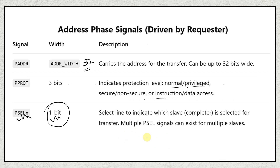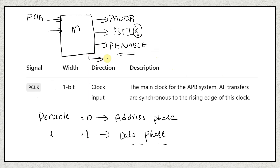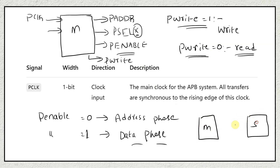Next is PWRITE, similar to HWRITE in AHB protocol. If PWRITE=1, it is a write transfer; if PWRITE=0, it is a read transfer. The master uses PWRITE to tell the slave the direction of transfer. If PWRITE=1, the slave knows the master will perform a write operation and data direction is master to slave. If PWRITE=0, it is a read operation and data direction is slave to master.